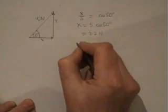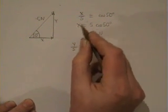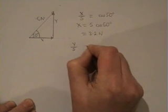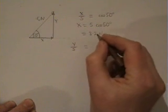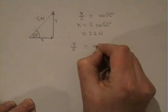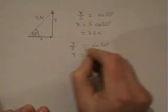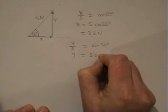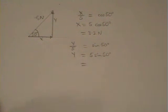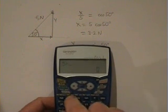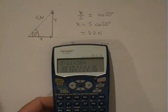And to find the y component, y divided by 5 is opposite by hypotenuse, which is sin 50 degrees. So y equals 5 sin 50 degrees, 5 times sin 50 degrees, which is 3.8 Newtons.